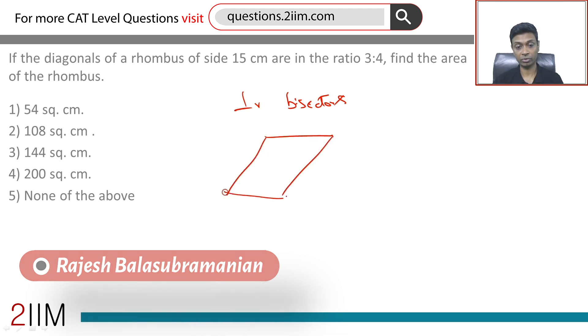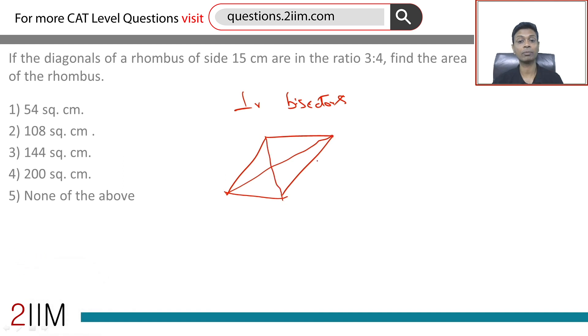So we have a rhombus like this. Diagonals of rhombus are perpendicular bisectors of each other. The ratio is 3 is to 4 - this is half of this diagonal, half of that diagonal.